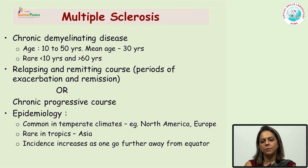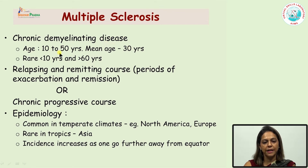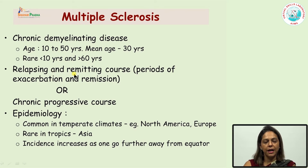Coming on to the second most common cause of demyelination, which is multiple sclerosis. Multiple sclerosis, in contrast to ADEM, is a chronic demyelinating disease; otherwise the pathology is similar to ADEM. It mostly affects people between the age of 10 to 50 years with a mean age of 30 years, and is very rare in young children and in the elderly population. It can mostly have a relapsing and remitting course with periods of exacerbation and remission, or it can have a chronic progressive course. It is commonly seen in North America and European countries but is rare in Asian countries.